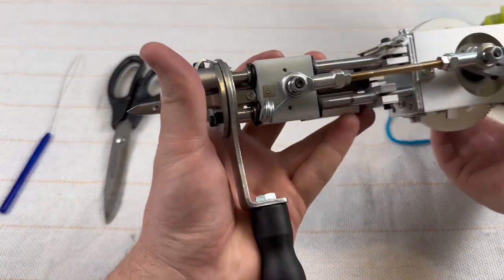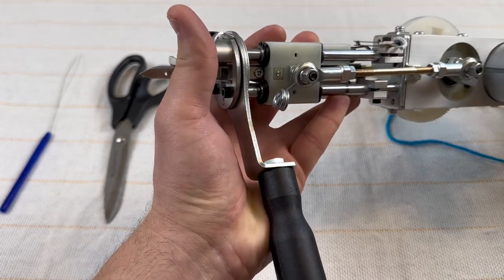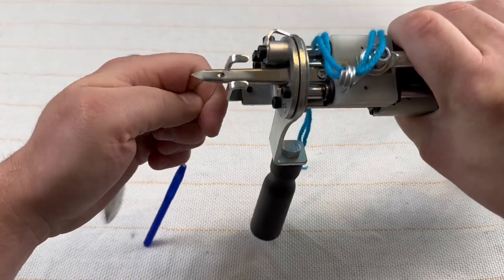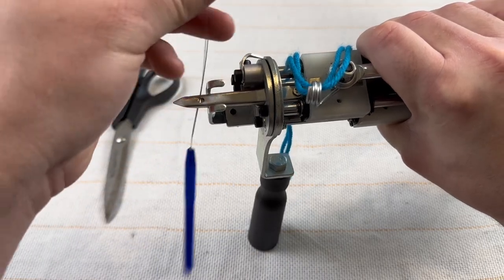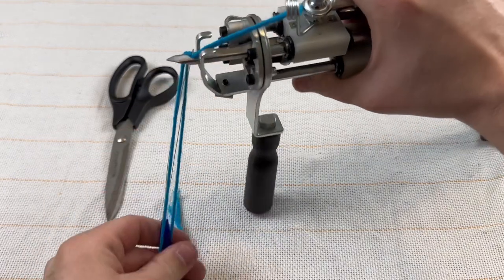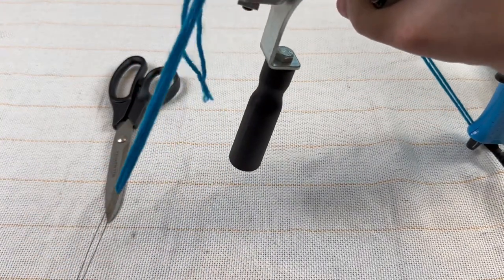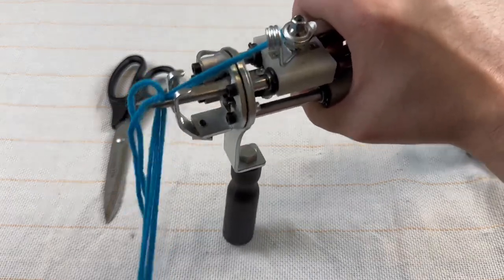Remember to tighten that bolt again because you don't want it to be loose. And you're all set. Now when you put the yarn in it's going to be a little more difficult for it to slide into that needle but that's exactly what you want. You'll notice I'll have to tug a little bit harder which is completely normal.